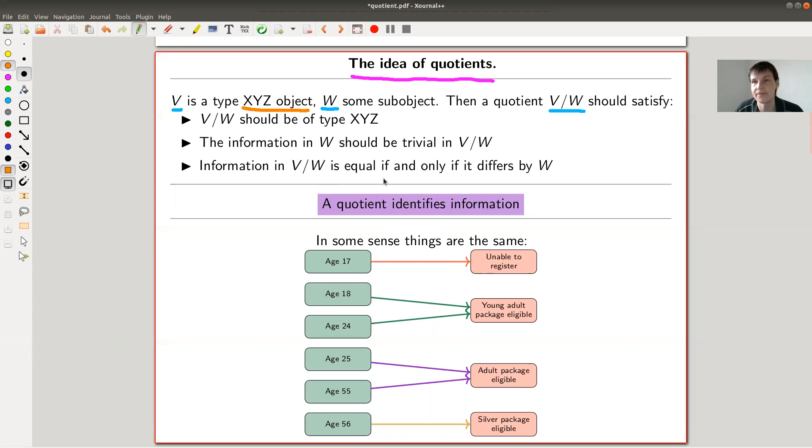And what would be the wish list? General philosophy is, whatever type you start with, that's the type you want to end with. So V mod W should be of the same type. If it was a vector space before, it should be a vector space afterwards. If it was a group before, it should be a group afterwards. And kind of the main idea, and that's what we will see in the very explicit examples, actually two very explicit examples, is the W should be completely trivial in V mod W. You kind of have divided by W. W is trivial. Everything contained in W, all the information contained in W is gone in V mod W.